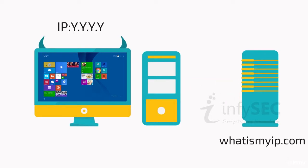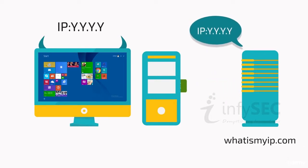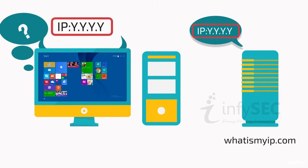say for example, whatismyip.com — it captures the actual IP of the sender. What can be done to avoid being traced?